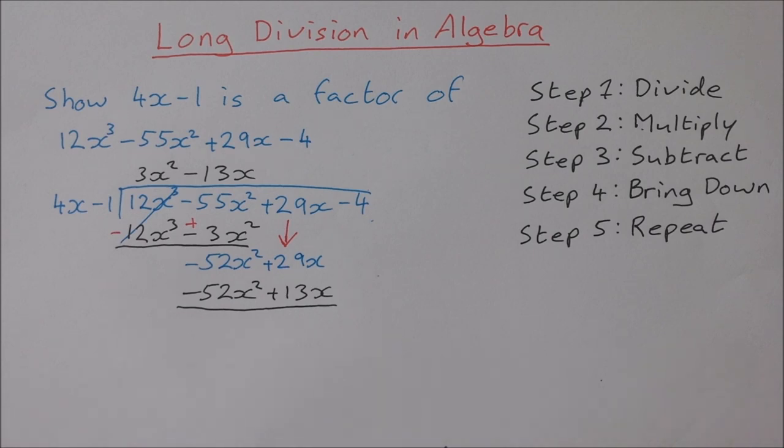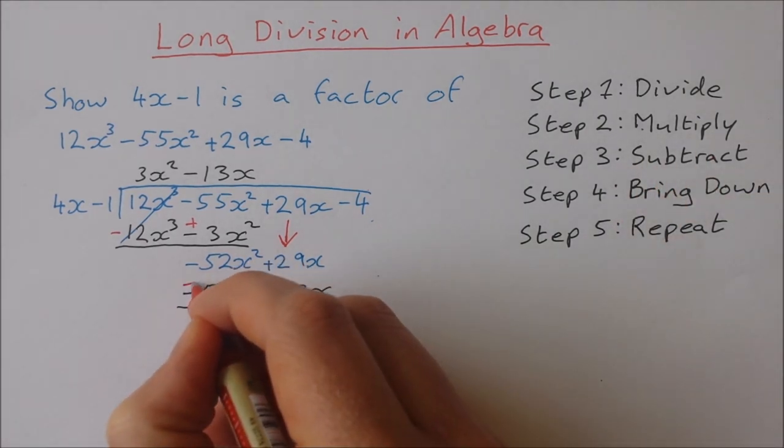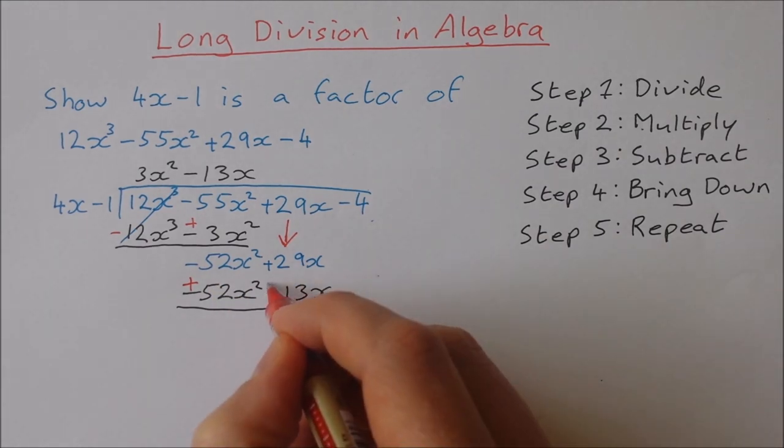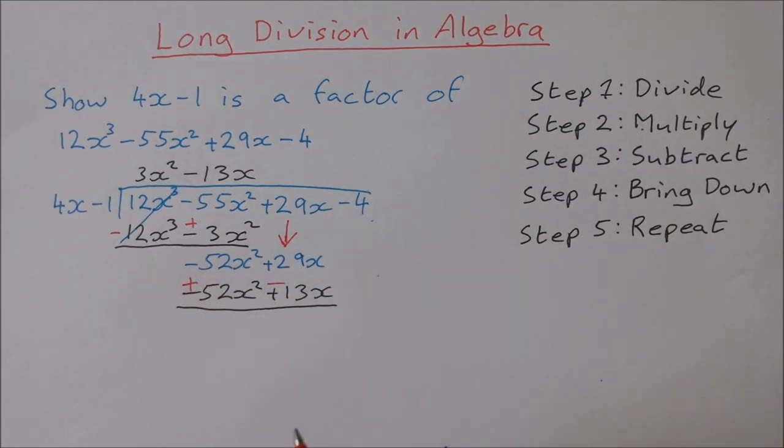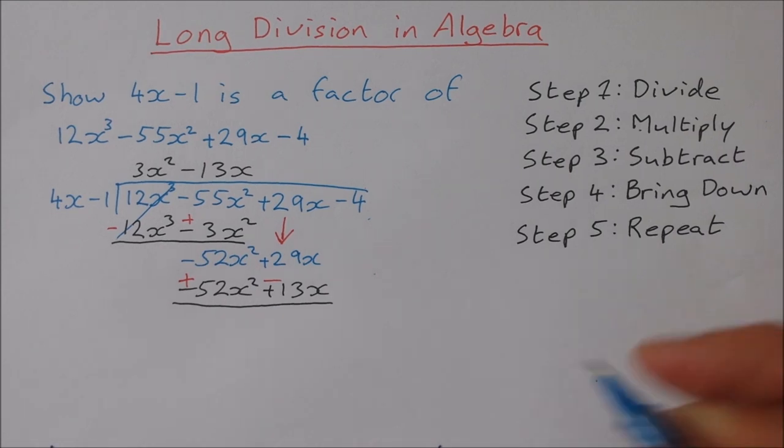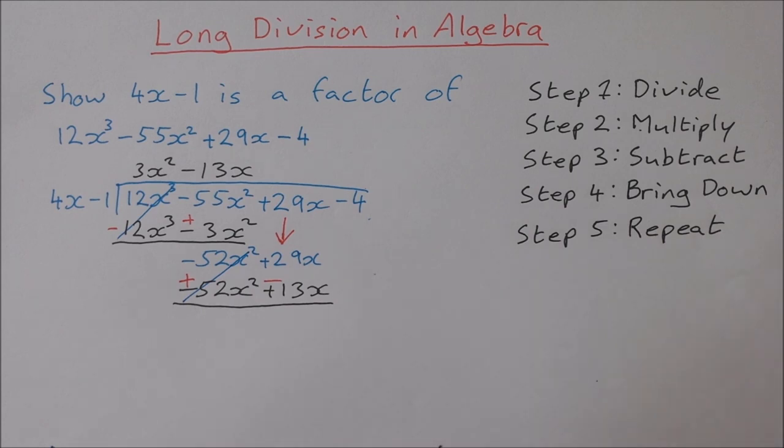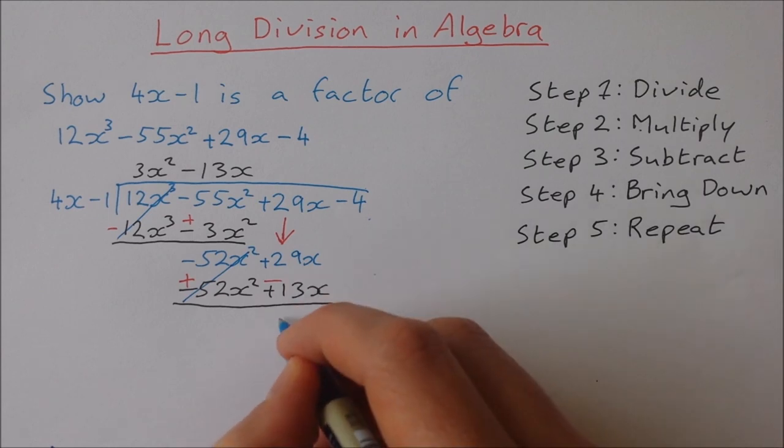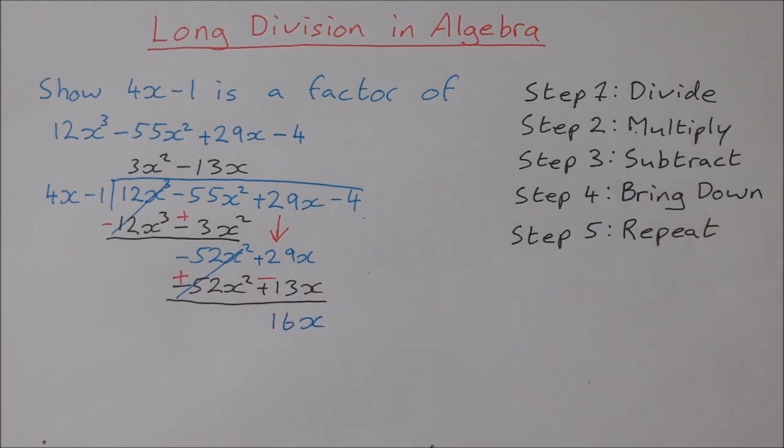Step 3 subtract. Now you have to change the value or the sign on both of these. So change minus to plus, plus to minus, and now I subtract. These two cancel to 0. They always cancel to 0. 29x minus 13x gives me 16x. That's step 3 subtract.